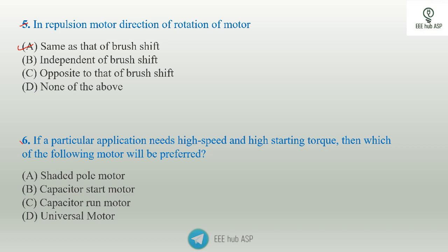Sixth question: if a particular application needs high speed and high starting torque, which motor will be preferred? The answer is the universal motor. DC series motor has high starting torque and variable speed characteristics. When run on AC supply, the DC series motor becomes a universal motor — that is the answer.